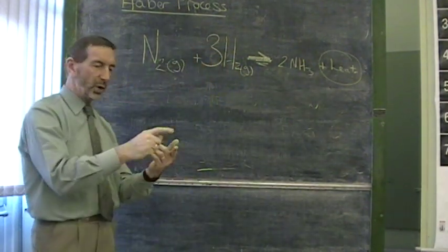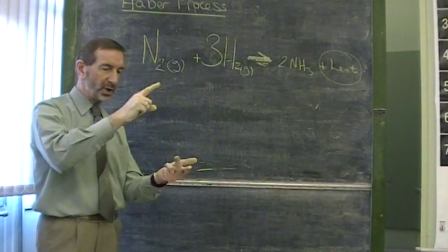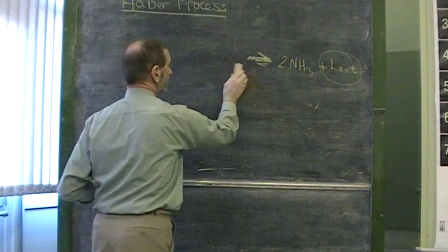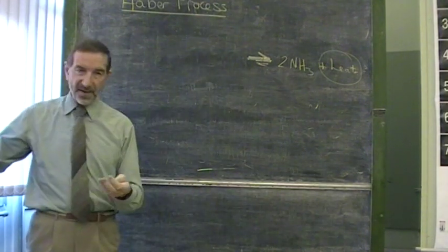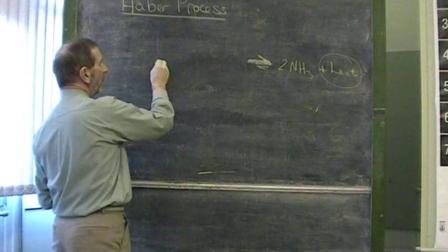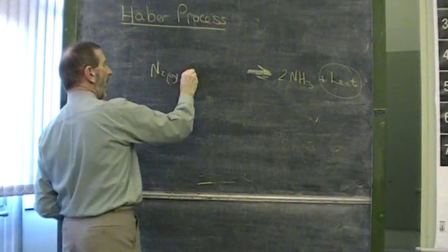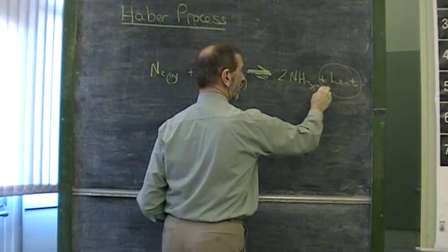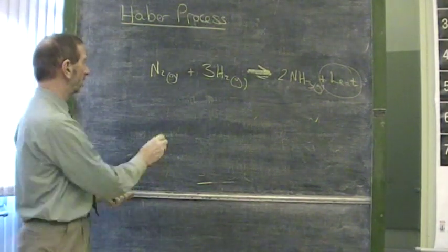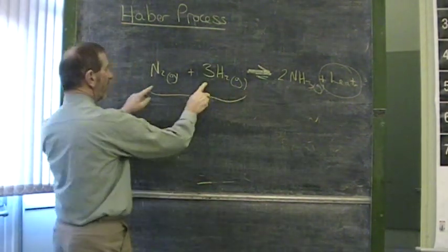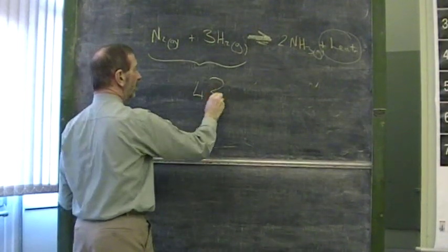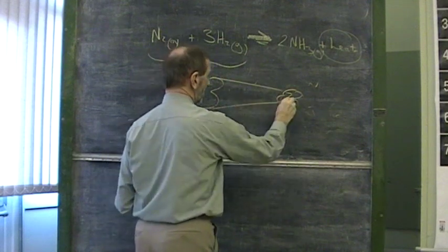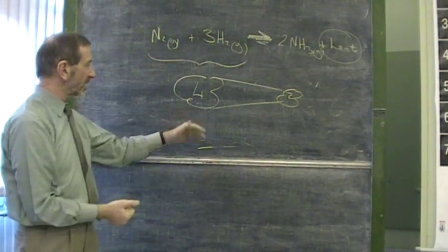What else can we do? We've said we could change the temperature, we can change the concentration. What else can we do to encourage the formation of ammonia? How about the effect of pressure? Now, will this work? Well, we have nitrogen gas, and we have hydrogen gas, and ammonia gas. So yes, there are gases. Is there a different volume? Let's find out. We have four volumes of gas on the left, but only two volumes of gas on the right. So this means both conditions. There has to be at least one gas, and there's a difference in volume.